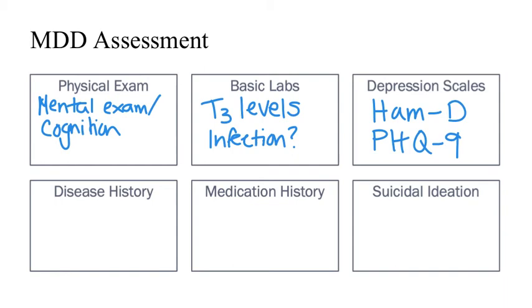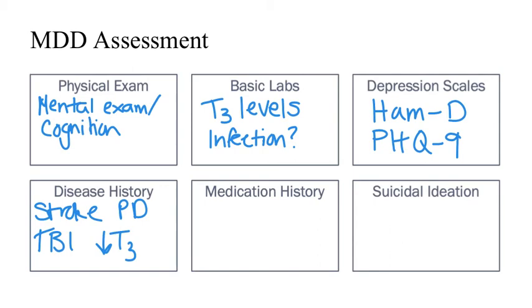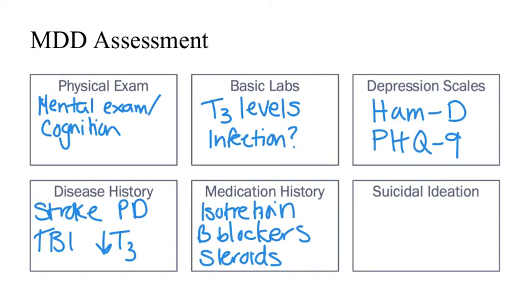A background of certain disease states can increase the risk of depression, including stroke, Parkinson's disease, traumatic brain injury, and hypothyroidism; if an underlying disease is present, it must also be treated concurrently. Other illnesses such as metabolic, cardiovascular, or infectious conditions must also be ruled out. Various medications can contribute to depressive symptoms, including isotretinoin, some anticonvulsants, beta-blockers especially propranolol, steroids, and varenicline. A patient taking any of those medications could be exhibiting depressive symptoms because of their medication.